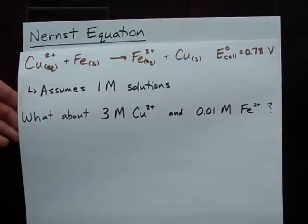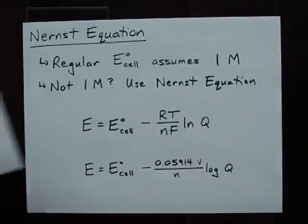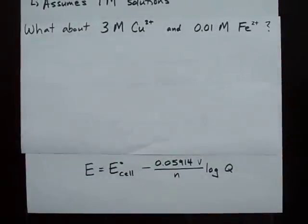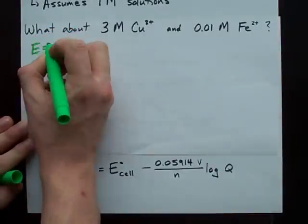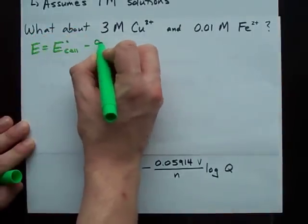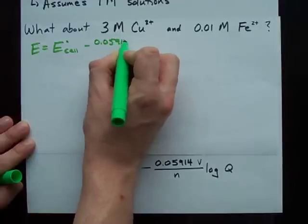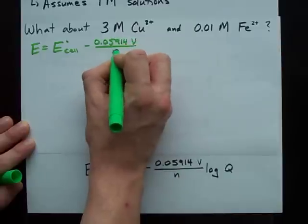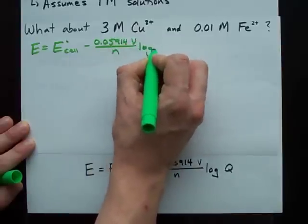Now, I didn't mention anything about temperature here, so I'm going to use this equation right here. E equals E naught cell minus 0.05914 divided by N times log Q.